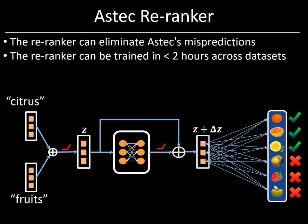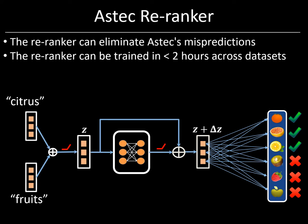So, to conclude the technical part of the talk, DeepXML can be trained in time order n·d·log L by decomposing the deep extreme classification task into four simpler subtasks, each of which could themselves be trained in time order n·d·log L, and this allows DeepXML to generate algorithms that are significantly more scalable than state-of-the-art deep extreme classifiers today.